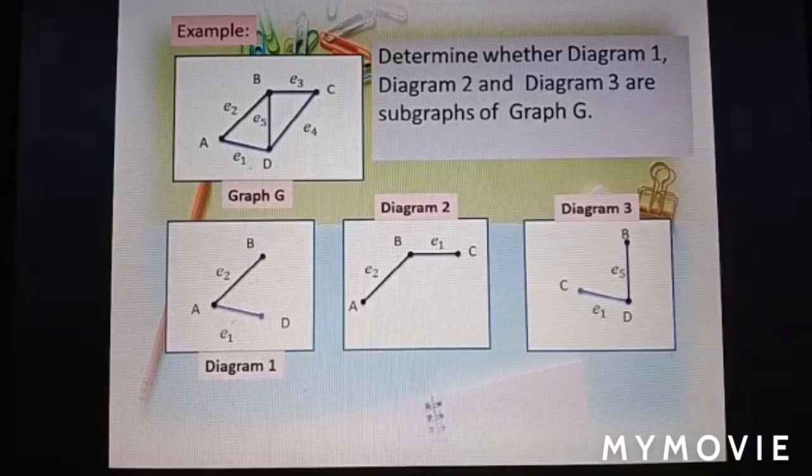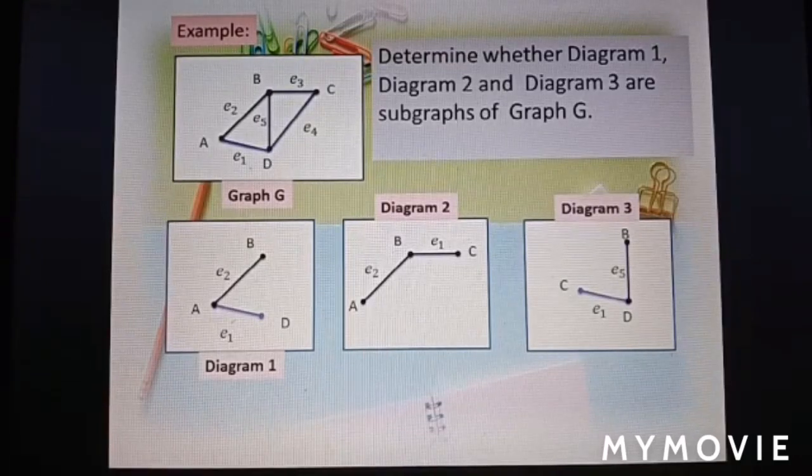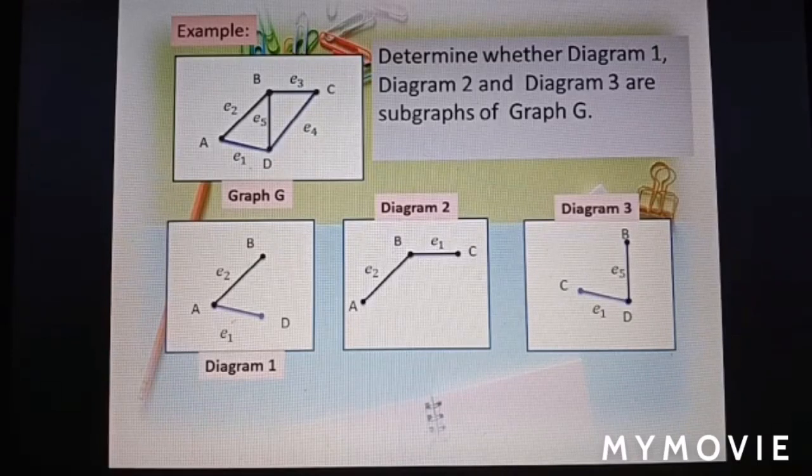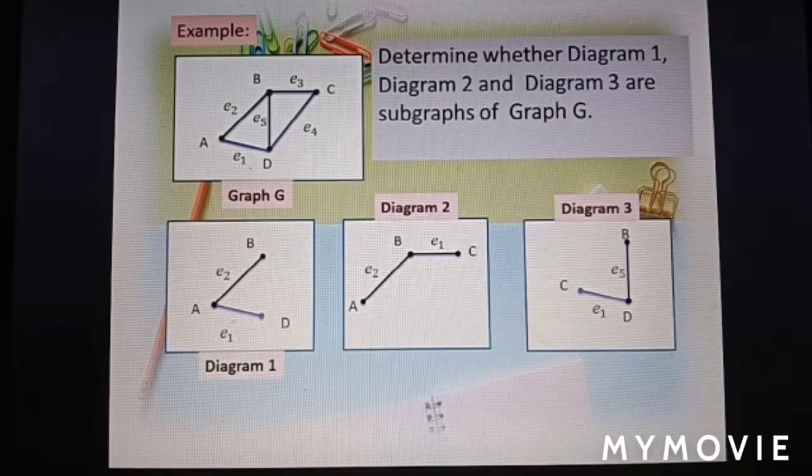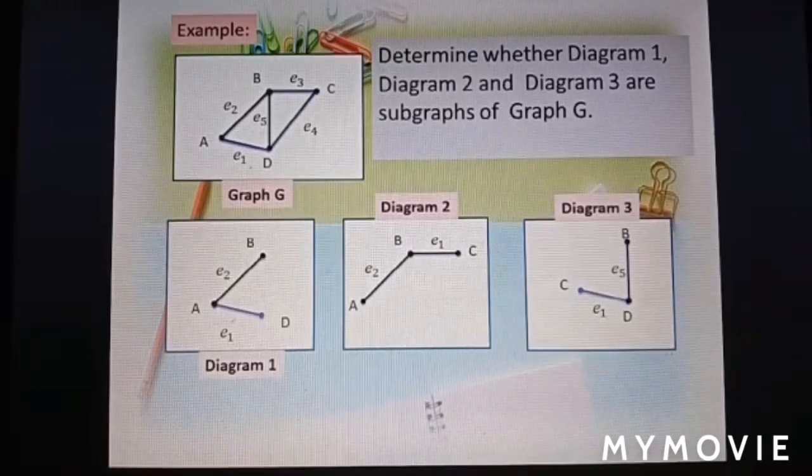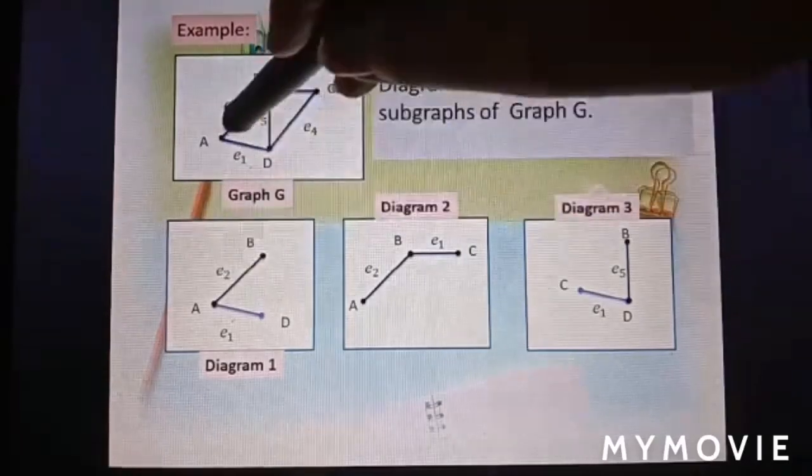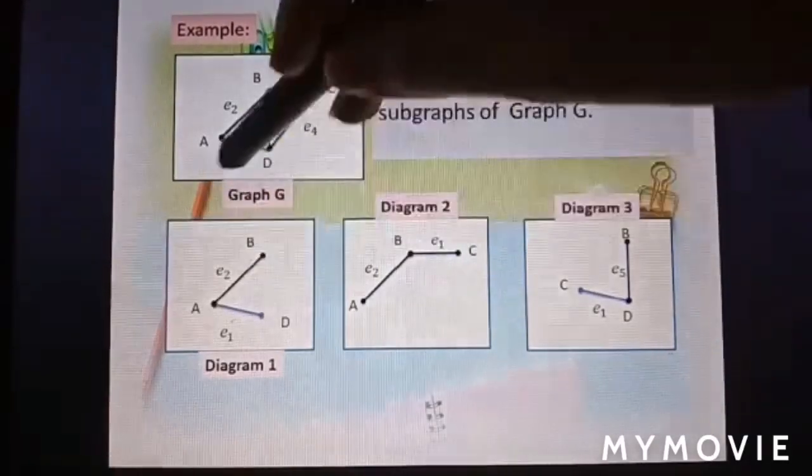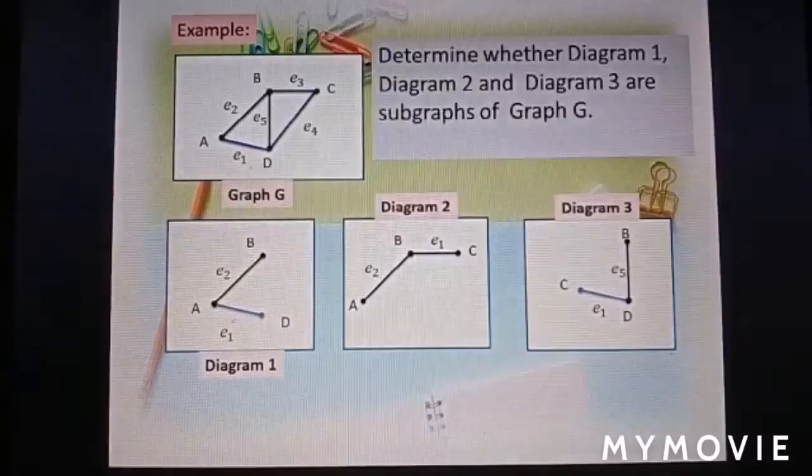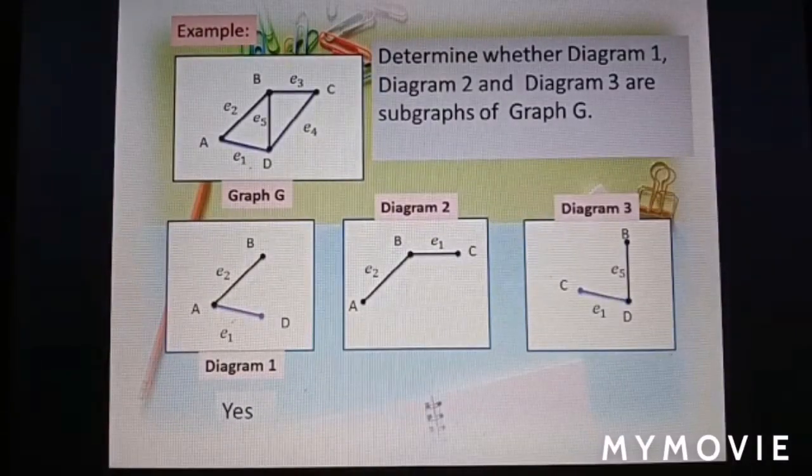Now we look at an example: determine whether diagram 1, diagram 2, and diagram 3 are subgraphs of graph G. We look at diagram 1 first. AB with edge e2, AD with edge e1. So diagram 1 is a subgraph of graph G.